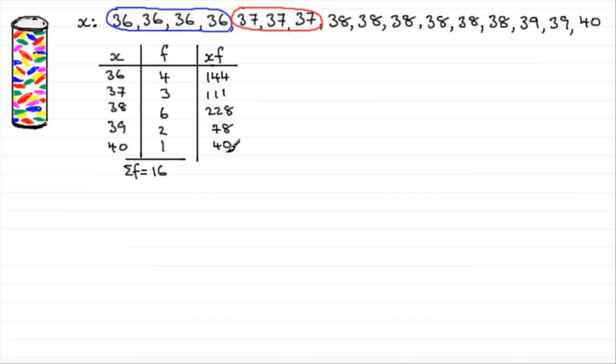So these are the subtotals. And then we need to add them up. And if you add them up, it's given by the sum of x times f. Add this column up, which is just like adding all these values up. And you find it comes to 601.